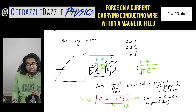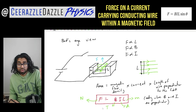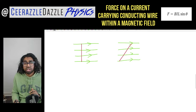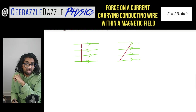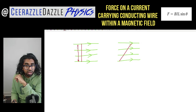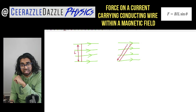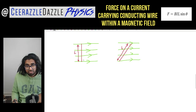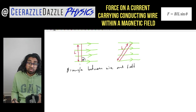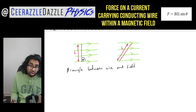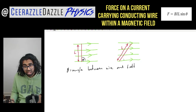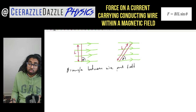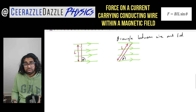So what about when the wire is not perpendicular to the field? I've got two more diagrams — still the bird's eye view. We have the wire within the field at a slightly different angle. We're going to introduce the angle theta, defined as the angle between the wire and the field. In one diagram theta is 90°, and in the other theta is smaller.